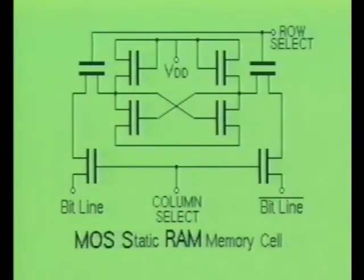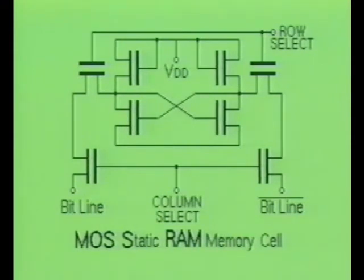The MOS static RAM cell, on the other hand, produces a much lower power dissipation. Typical power dissipation for the MOS device is only about 0.15 milliwatts per bit. However, access time can typically take as long as 100 nanoseconds.